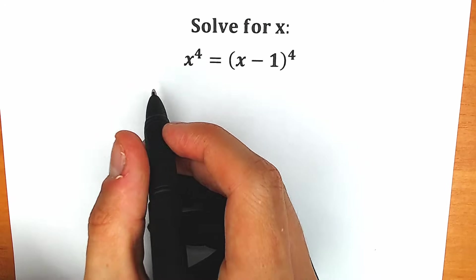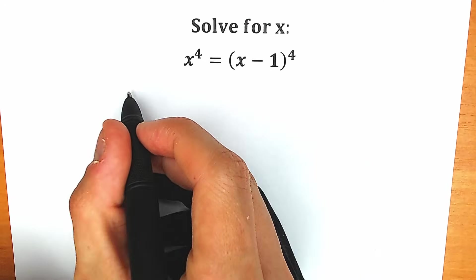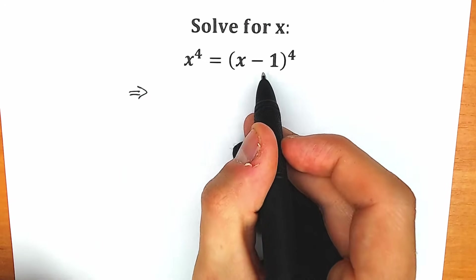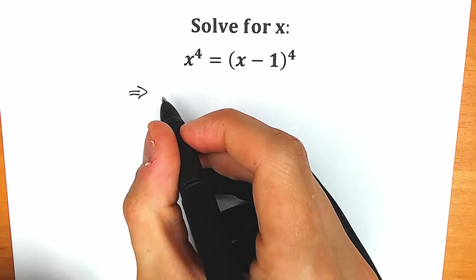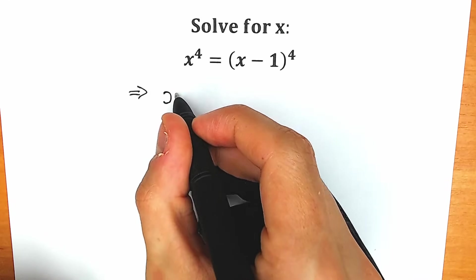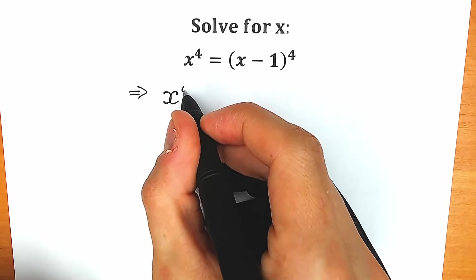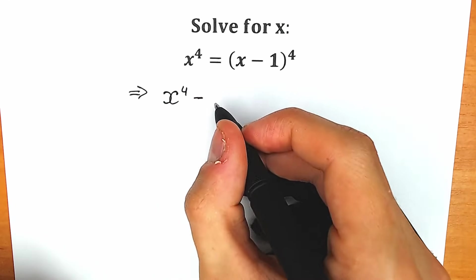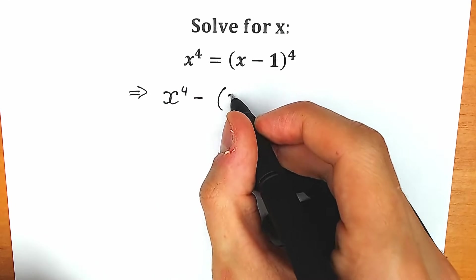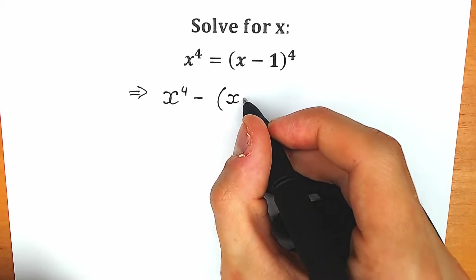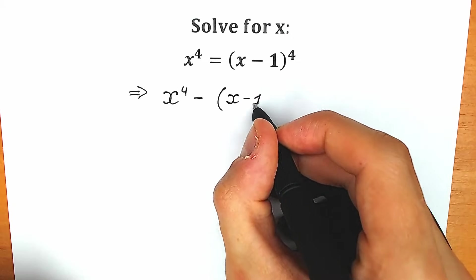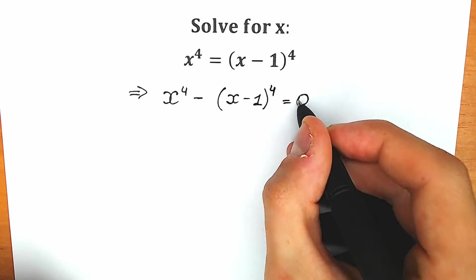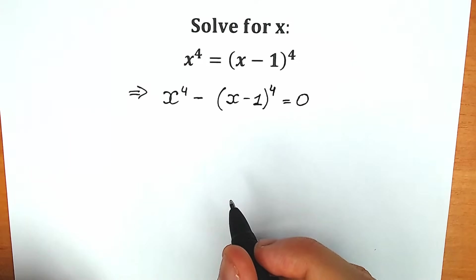So first of all, how can we solve it? Let's move the right side expression to the left side. As a result, we have x to the fourth power minus x minus 1 to the fourth power equal to zero.